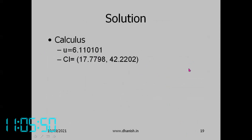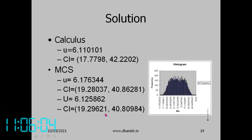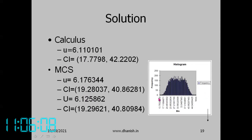Using calculus, the standard uncertainty is 6.1 and the coverage interval is 17.8 to 42.2. Using Monte Carlo simulation, one trial gave 6.17 and another gave 6.12. The histogram shows a mixture of uniform and normal distributions — not truly normal. That is why there is a difference: the Monte Carlo coverage interval is 19.3 to 40.8, which is smaller. Here we do not have to assume a normal distribution.